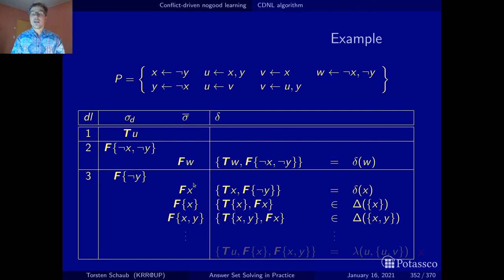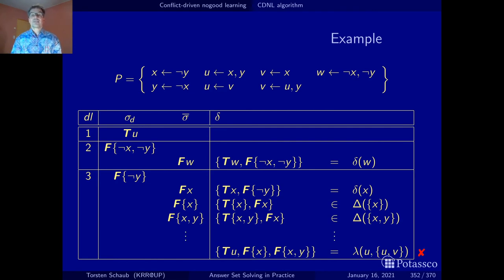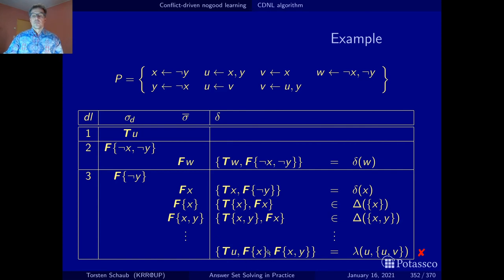If we continue with propagation, at some point we figure out — and this is what no-good propagation does, which we will detail in the next section — that this no-good here is violated. Hence we obtain a conflict and conflict analysis will start. Let's check that this no-good is indeed violated: T(u) is the first decision we made, F of the body containing x is here in the assignment, and the body containing x and y is also here. Indeed this no-good is completely contained in the assignment, indicating a conflict.